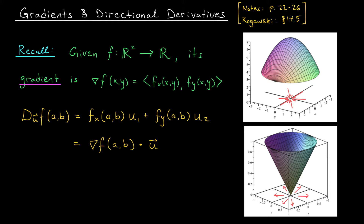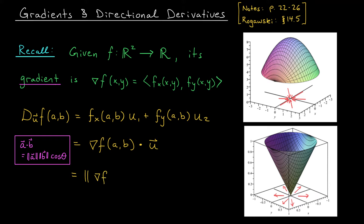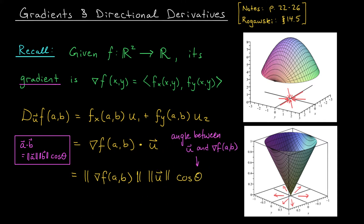We began to explore that connection in our last video. In particular, we saw that the directional derivative of f at ab in the direction of u is equal to the dot product of the gradient of f at ab and the vector u. Casting your mind back to linear algebra, the dot product of two vectors a and b equals the norm of a times the norm of b times the cosine of the angle between them. So the dot product of the gradient vector with u equals the norm of del f at ab, times the norm of u, times cos theta, where theta is the angle between those two vectors.